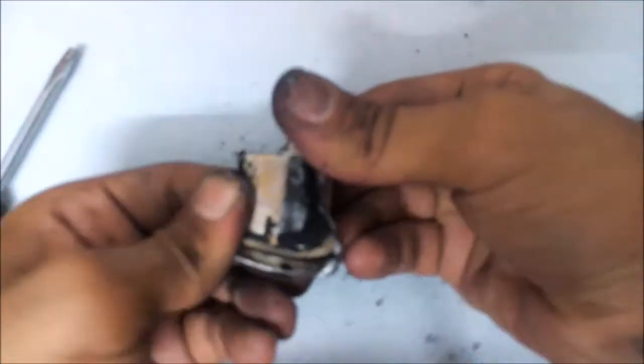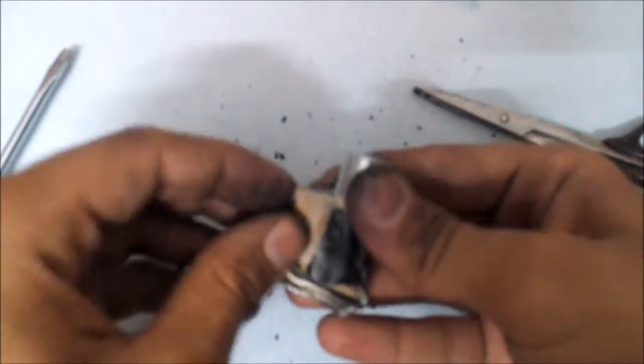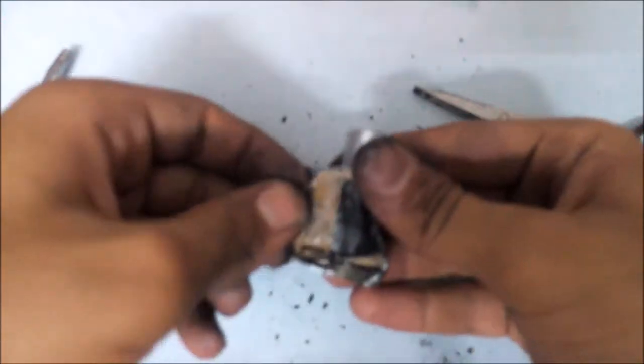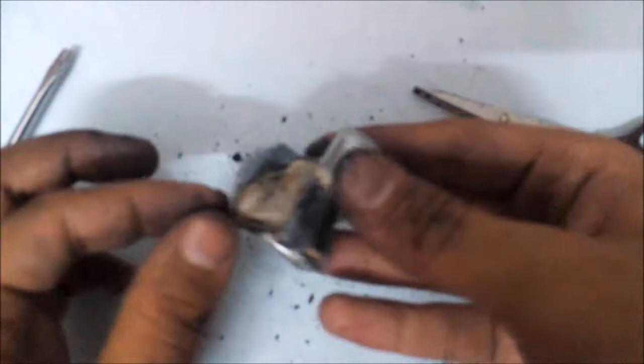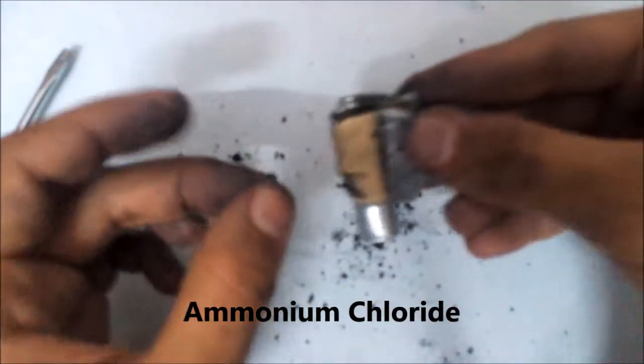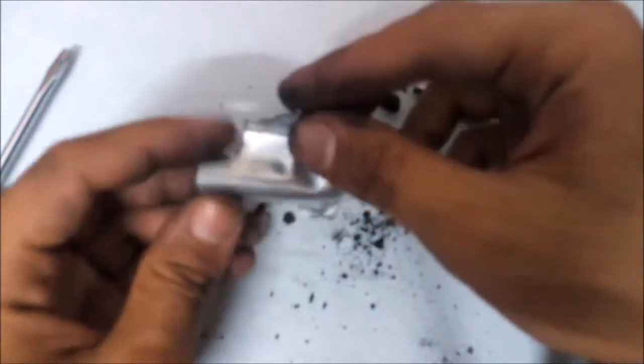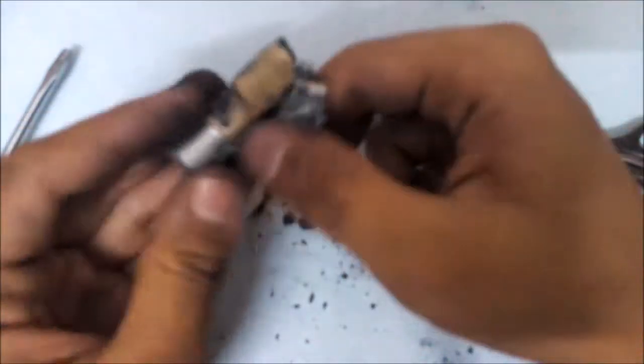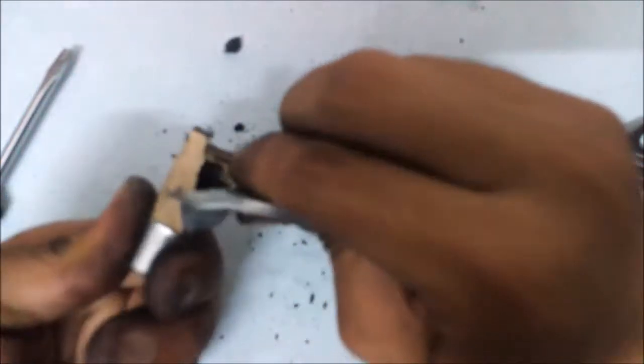Now just see what lies inside here. Below the metal casing you can see a brown color paper. This is a little wet because of the chemical which has been soaked in it, that is ammonium chloride. We cannot extract ammonium chloride from here, so the outer metal casing, the zinc metal, is one of our important chemicals. We can keep this part aside and discard this paper.